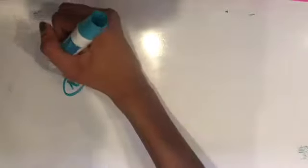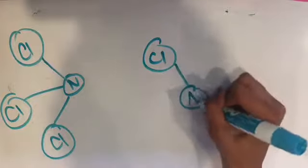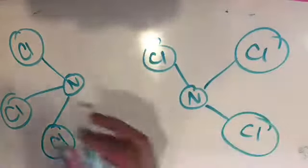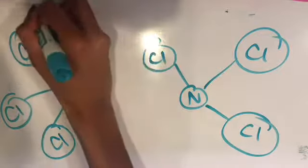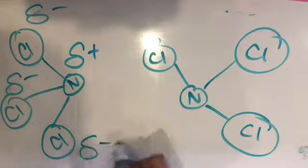Let's use nitrogen trichloride as an example. Nitrogen trichloride is composed of one nitrogen atom and three chlorine atoms. Because the chlorine atoms are more electronegative than the nitrogen atom, all the chlorine atoms have a partial negative charge and the nitrogen atom has a partial positive charge.